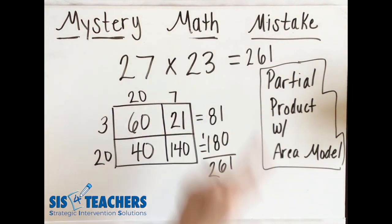Again I believe that 27 times 23 equals 261 and I was able to prove it on my area model with partial products.